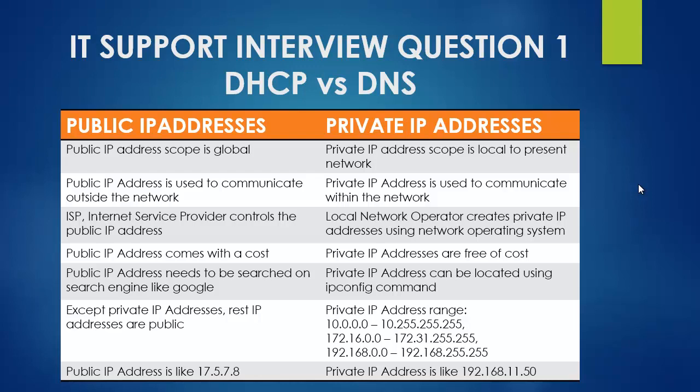The private IP address is local to the present network. These private IP addresses start with your own router or with your ISP's local area connection. In the private IP address space, you have the choice to use any IP address scheme within the private IP address range — it's up to you.